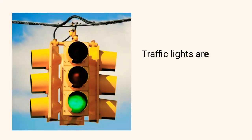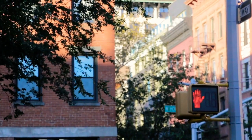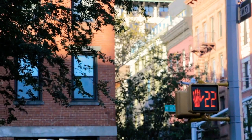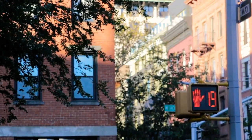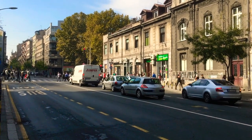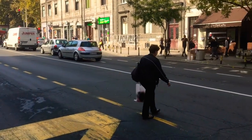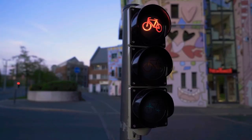First, we need to know what is the use of traffic lights and how important it is to us. Traffic lights are designed to ensure an orderly flow of traffic. They provide an opportunity for pedestrians or vehicles to cross an intersection and help reduce the number of conflicts between vehicles entering intersections from different directions.